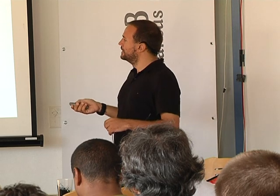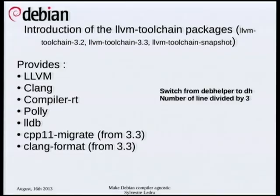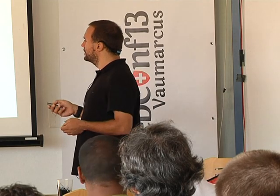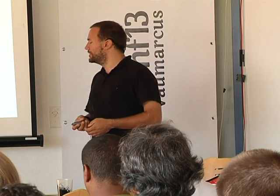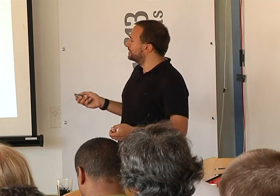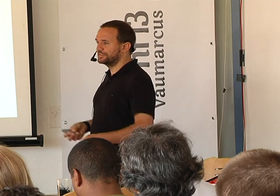Many people think LLDB is going to replace GDB at some point. It's not fully ready yet, but it might replace it eventually. C++11 migrate is a tool that, if you have C++ code using constructs that would be improved by C++11, automatically detects and updates them to C++11 code — many people in the LLVM community are starting to use it. And clang-format is yet another formatting tool for C and C++.